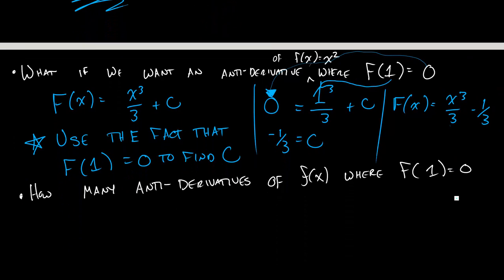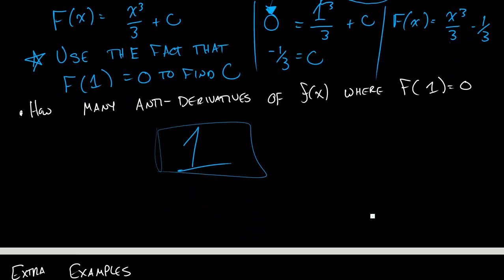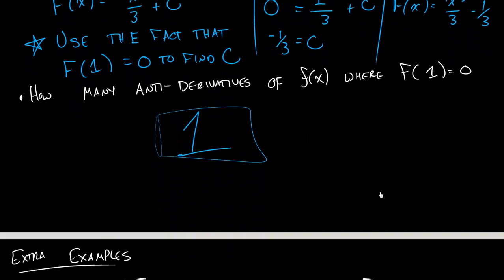How many antiderivatives are there of little f of x where big F of 1 equals 0? That is a big fat 1. There's only one value there. So let's look at what some of these other problems could look like where we have some maybe trickier antiderivatives.